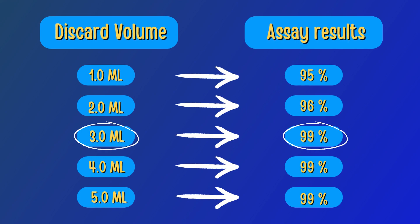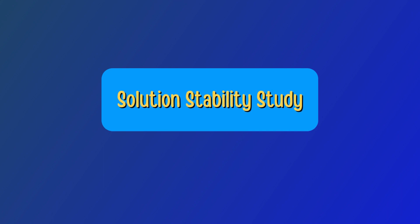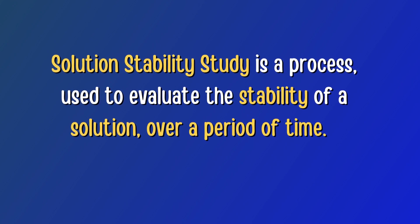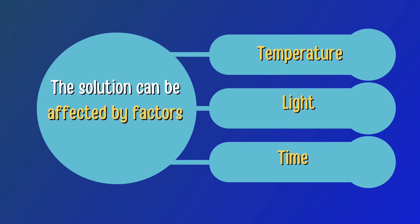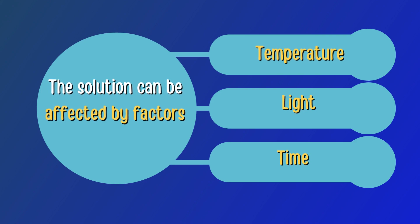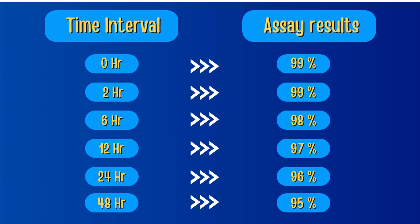Our last parameter is solution stability study — a process used to evaluate the stability of a solution over a period of time. The solution can be affected by factors such as temperature, light, and time. By conducting a solution stability study, we can determine the period for which the solution is stable and ensure that results obtained are accurate. The sample solution is stored at a specific temperature and analyzed at different time intervals, with results compared at each interval to determine solution stability.